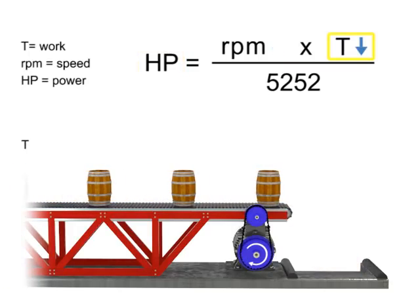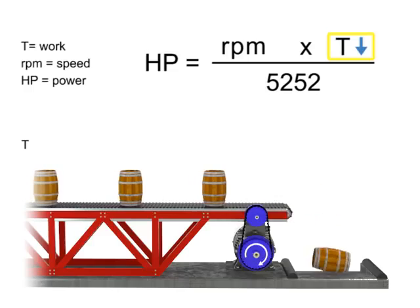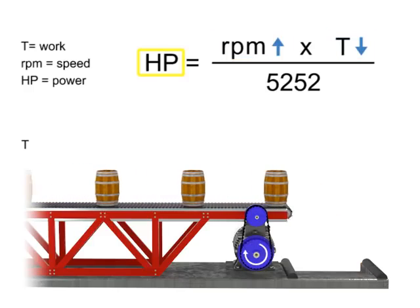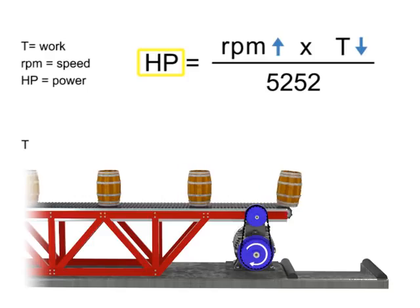If the torque decreases, the speed of the conveyor increases and the horsepower generated by the motor remains constant.